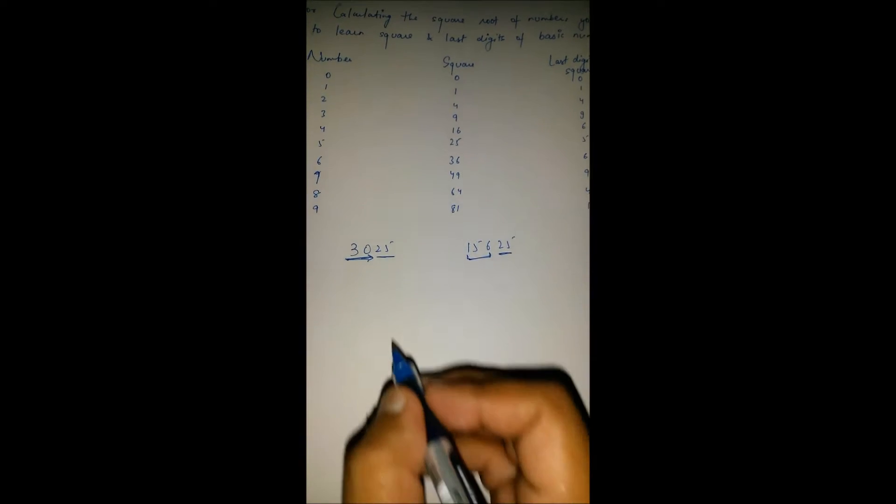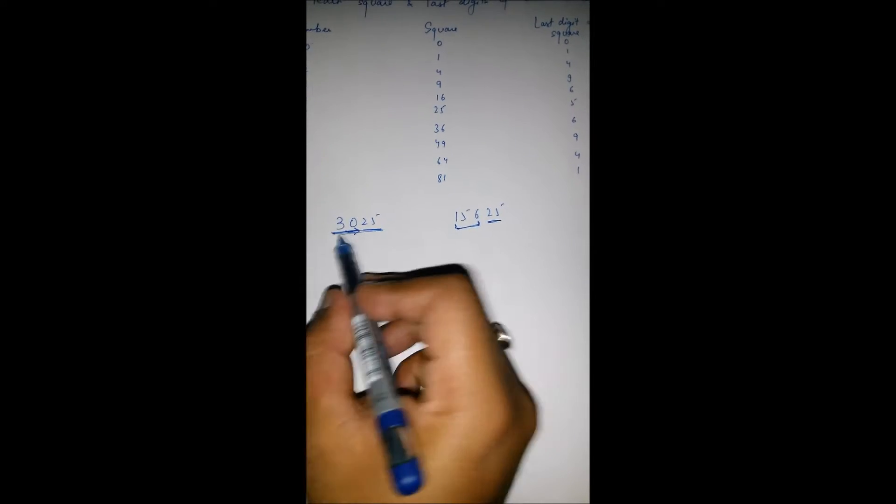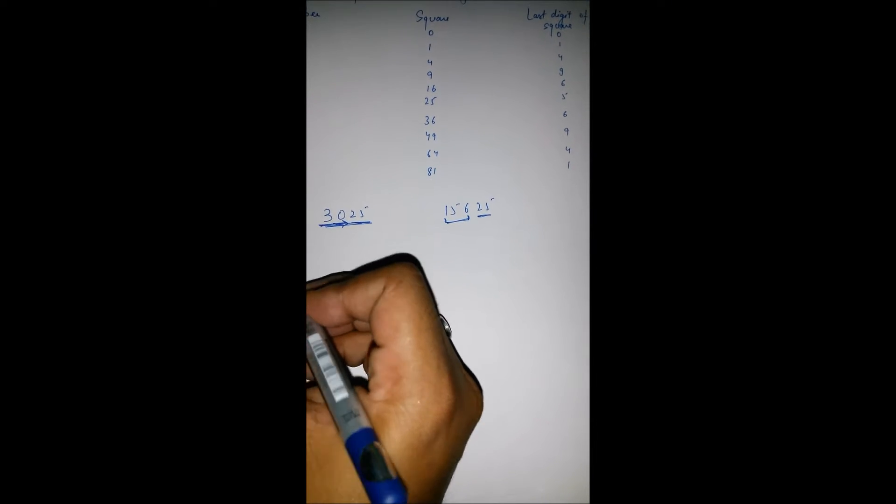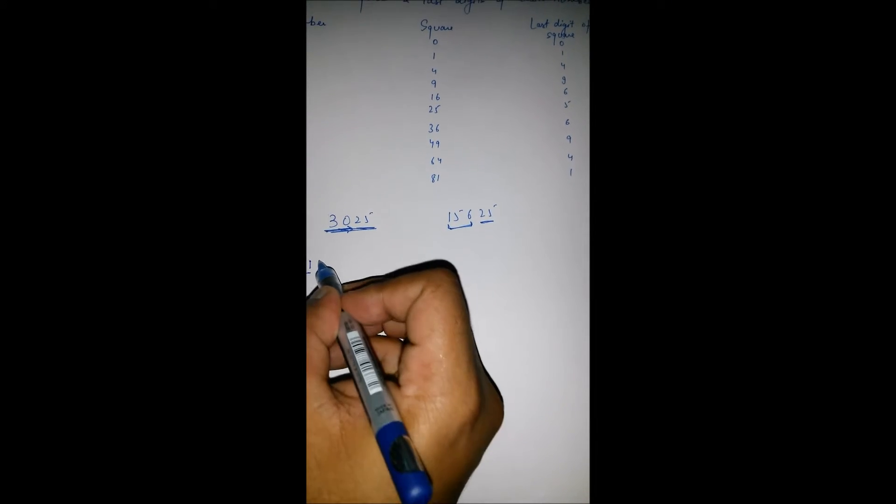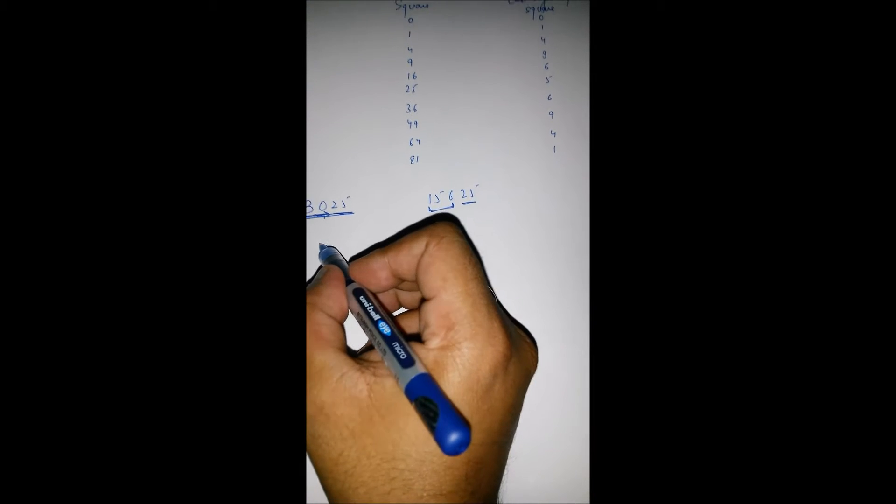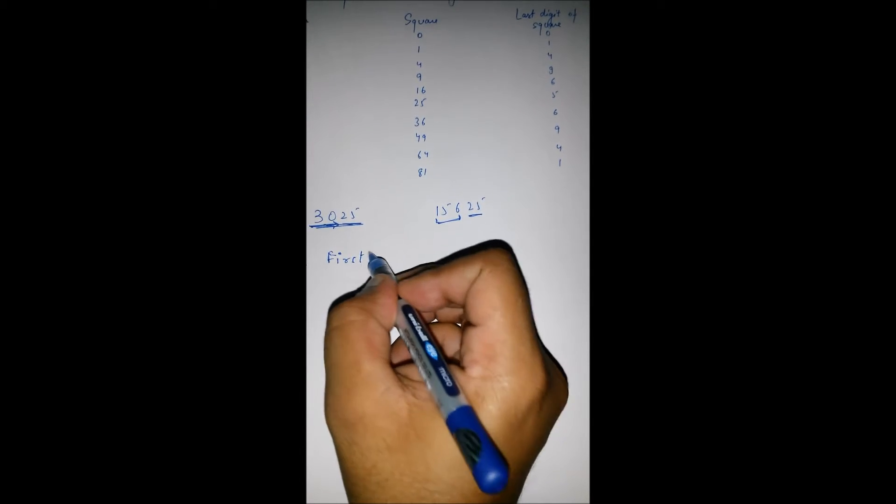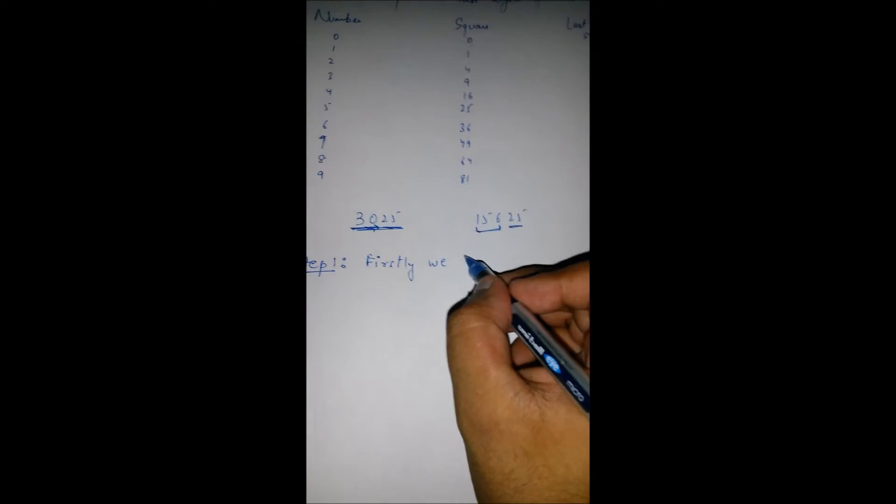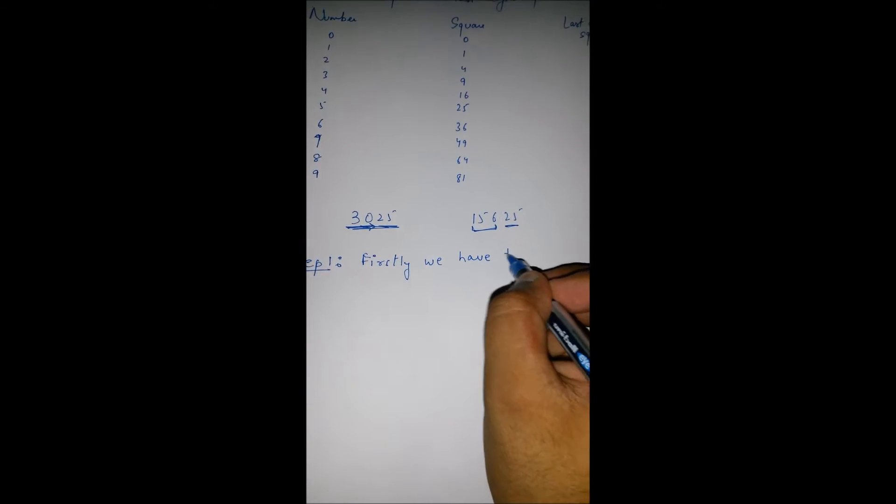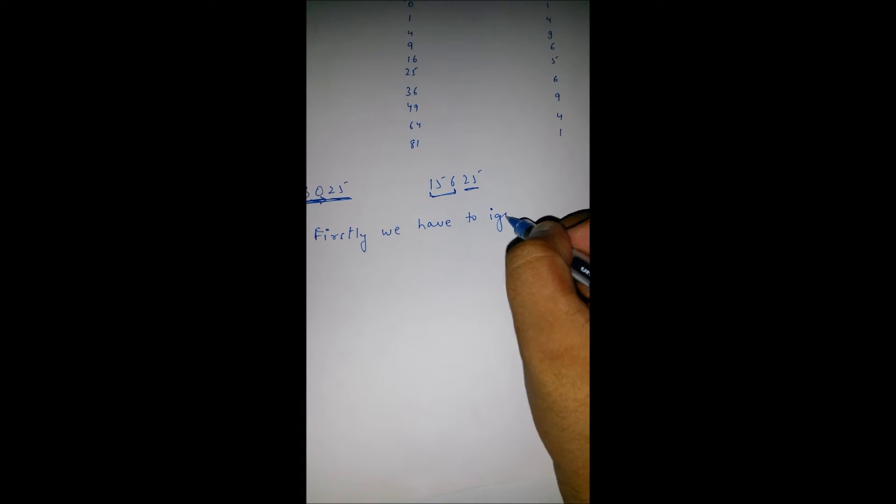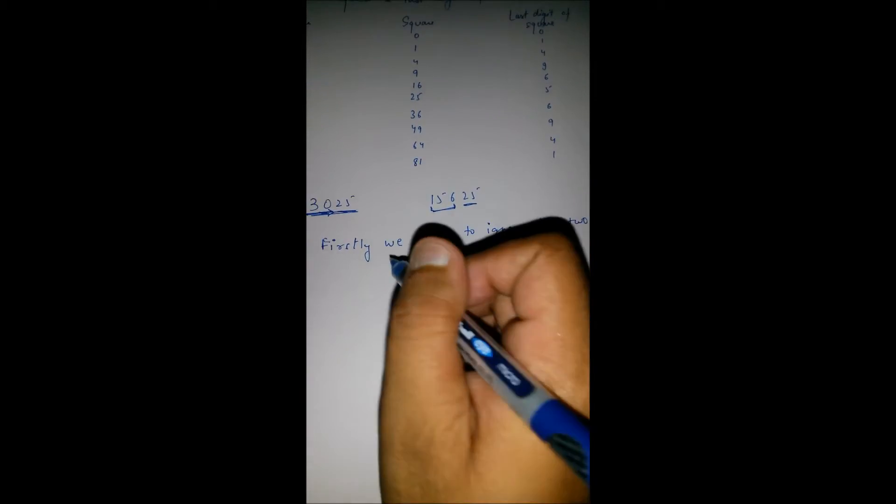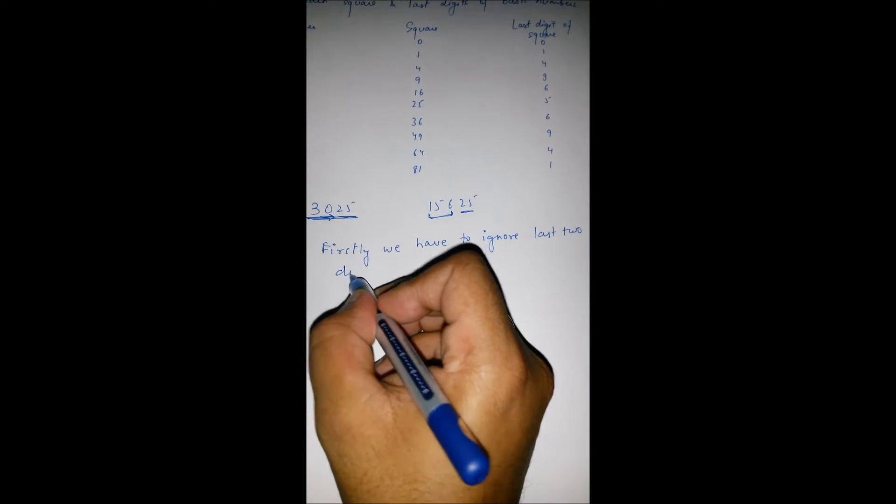Let's take an example. Suppose we have a number 3025. Step 1: firstly we have to ignore the last two digits.